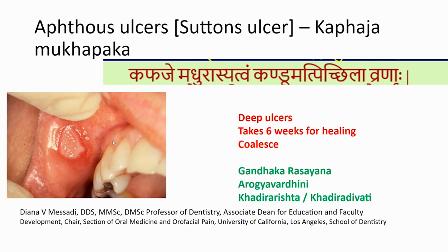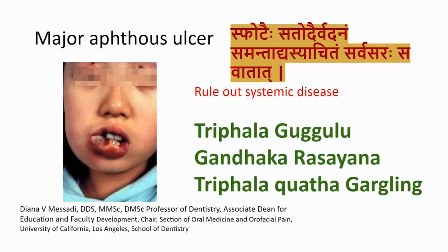Among the stomatitis, you have two — minor aphthous and Sutton's ulcer. The minor aphthous is more common and easier to treat, but Sutton's ulcer takes a longer time. Because of the involvement of the Kaphaja variety, my prescription would be Gandha-Ghandha-Sayan, Aarogya-Vatini, Khadira-Arista or Khadira-Kwati-Churna, and this gives better relief and a shorter duration of treatment would be enough to manage that condition.